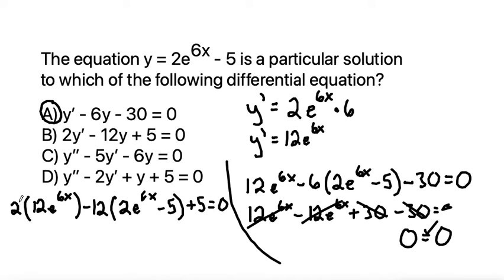So distributing 12 times 2 is 24, 24e to the 6x and then again minus 24e to the 6x. We need to distribute our negative 12 to our negative 5 which makes plus 60 and then bring down our plus 5 equals 0.